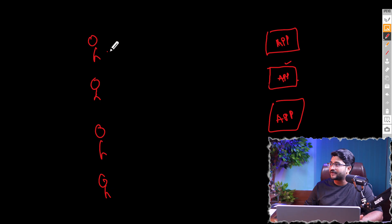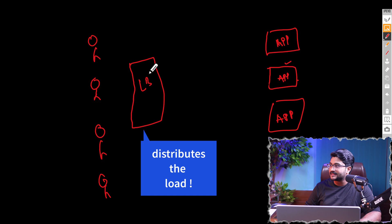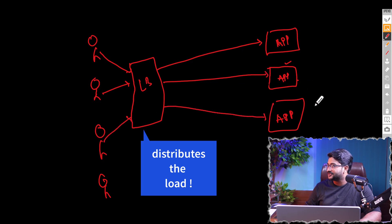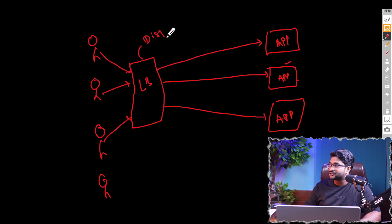Now the user will not directly communicate with this application. Instead, we introduce a load balancer. The user request comes to the load balancer, and the load balancer dispatches the request to one of the application instances running in different servers. You can treat this load balancer as a dispatcher.